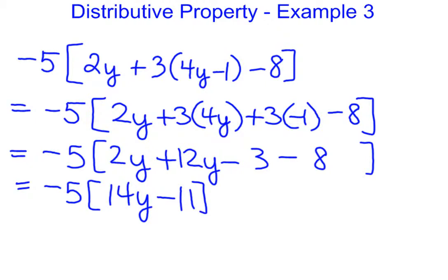Now, you're like, oh boy, this is now looking exactly like distributive property. So here we go. Distributive property one more time. Negative 5 times 14y. Negative 5 times negative 11.